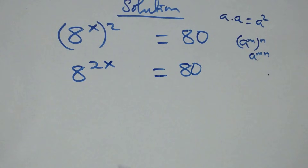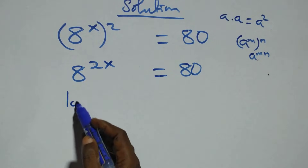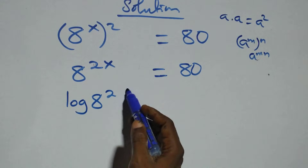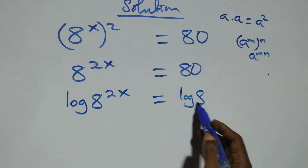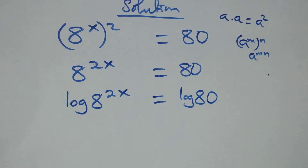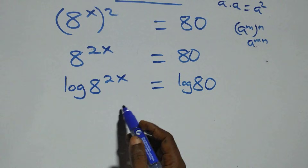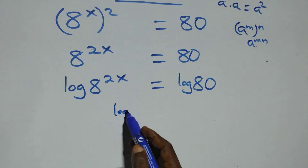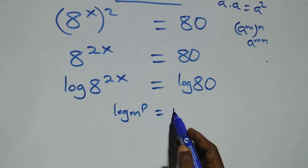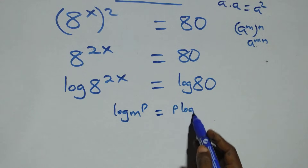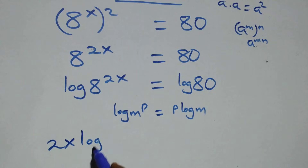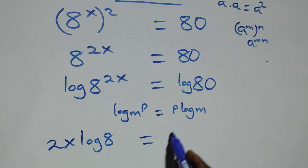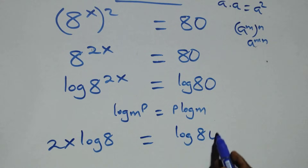The next step, we take the log on both sides. Here we have log of 8 raised to the power 2x equals to log 80. Then we apply the power rule of logarithms: log n raised to power p is the same thing as p log n. So we have 2x log 8 equals to log 80.